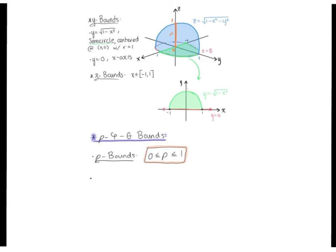Next, let's consider the phi bounds. We want to keep in mind that phi is the angle that fans out from the positive z-axis.